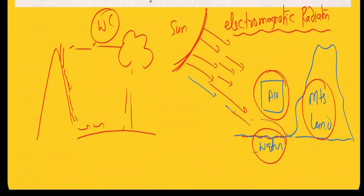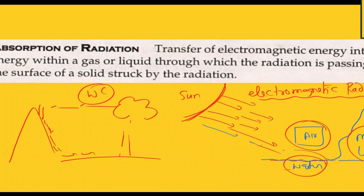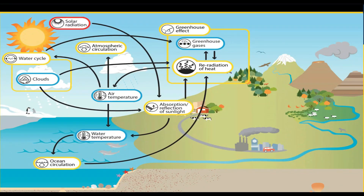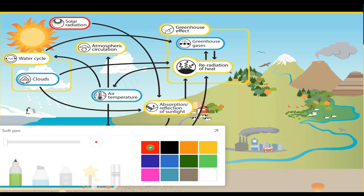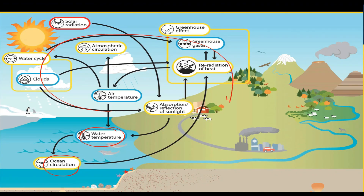On the Earth's surface, life exists because of this absorption of radiation. Absorption of radiation takes place in water, temperature increases, ocean circulation starts, cloud formation occurs, and the water cycle takes place. So many things are happening because of absorption of radiation, and life and everything moves in a cyclic form on the Earth's surface.